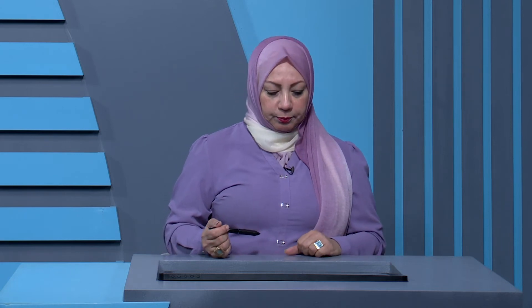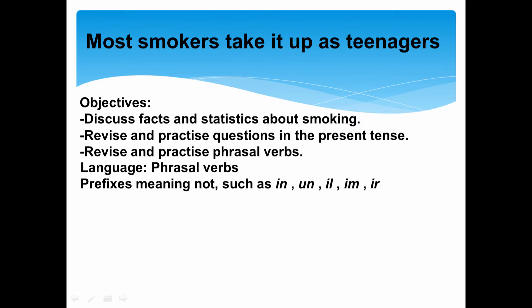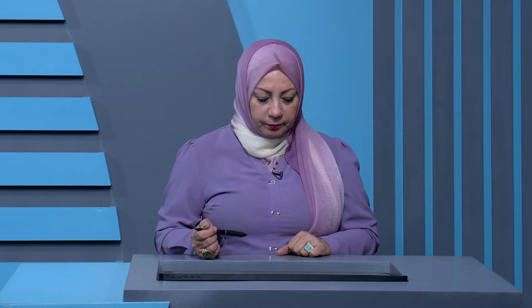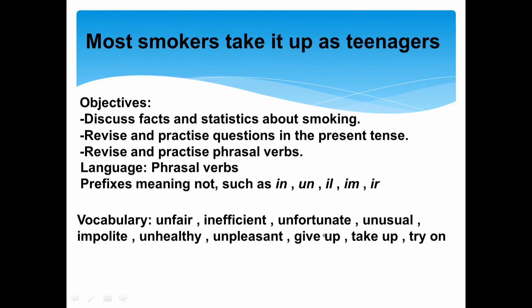رح نعرف منيش تتكون وكيفية استعمالها في الجمل. And then we have prefixes — البادئات — التي تعطي المعنى المعاكس للصفات، such as: in-, un-, il-, im-, ir-. هذه البادئات نضعها أمام الصفات حتى نعطي المعنى المعاكس. The vocabulary لهذا الدرس: unfair، inefficient، unfortunate، unusual، impolite، unhealthy، unpleasant، give up، take up، and try on. رح نعرف معانيها من خلال درسنا لهذا اليوم.